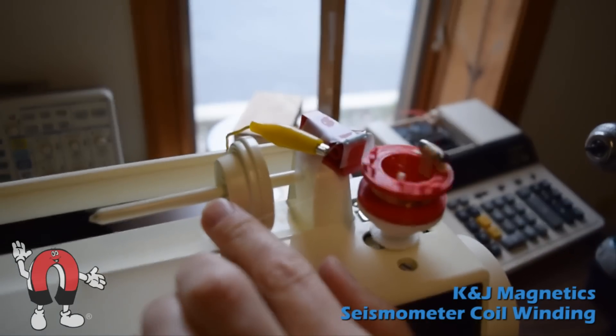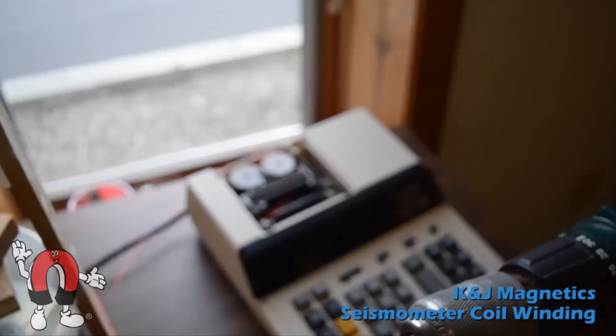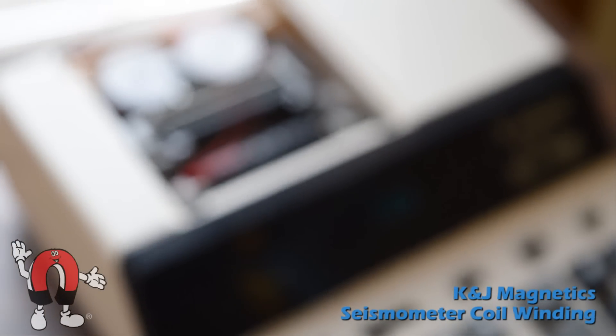The magnet passing by a reed switch clicks the switch every time it passes by and lets us count the numbers on a calculator.